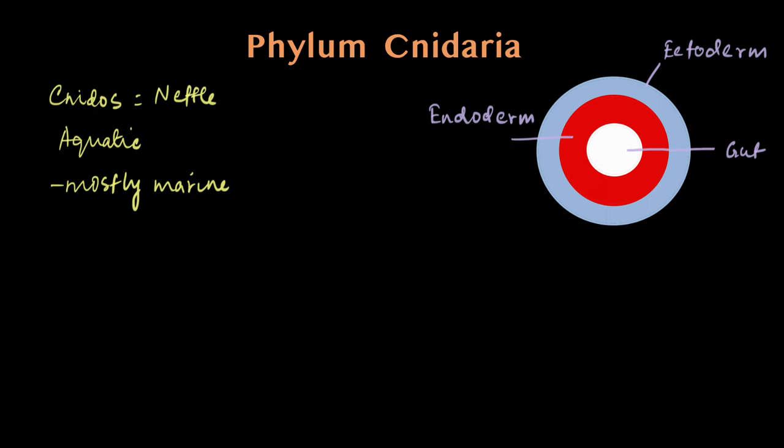The ectoderm is the outer tissue layer, and the endoderm is the inner tissue layer. These two tissue layers cover a space inside which is the gut or their digestive tract. These are the first phylum—the most primitive phylum—to have a tissue level of organization.